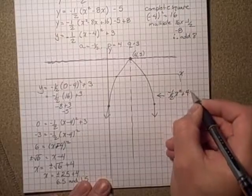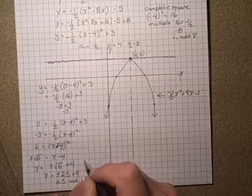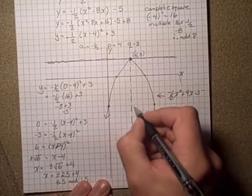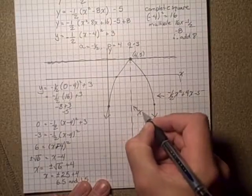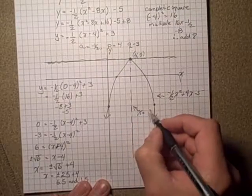So we can label this out. This is our negative one half x squared plus 4x minus 5. That's our equation, and here's our axis of symmetry, x is equal to, in our case, 4.